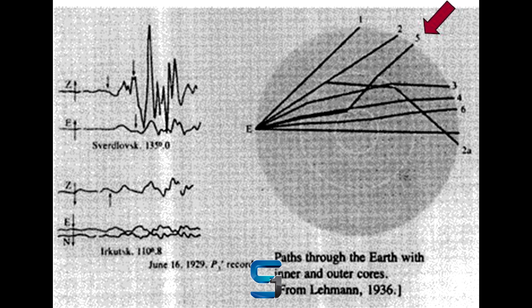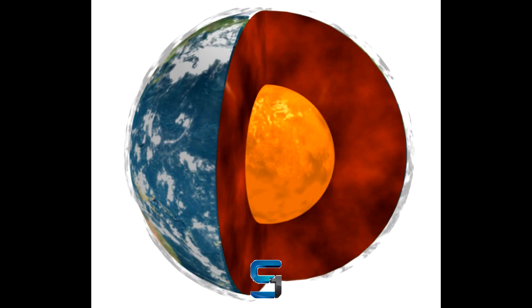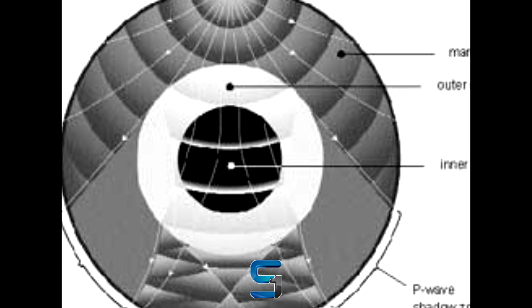"I then placed a smaller core inside the first core and let the velocity in it be larger so that a reflection would occur when the rays through the larger core met it," she wrote years later. "The existence of a small solid core in the innermost part of the Earth was seen to result in waves emerging at distances where it had not been possible to predict their presence."